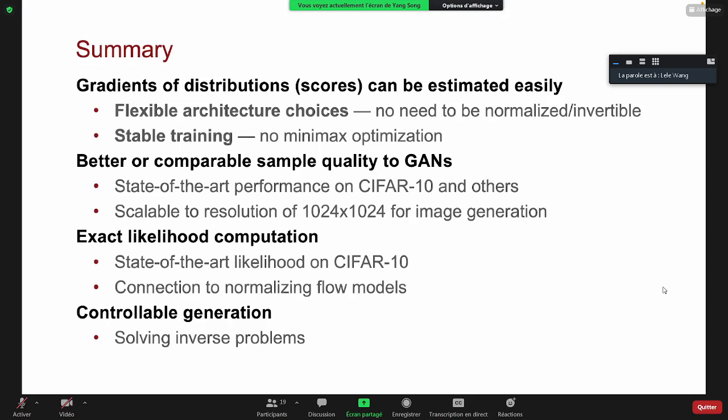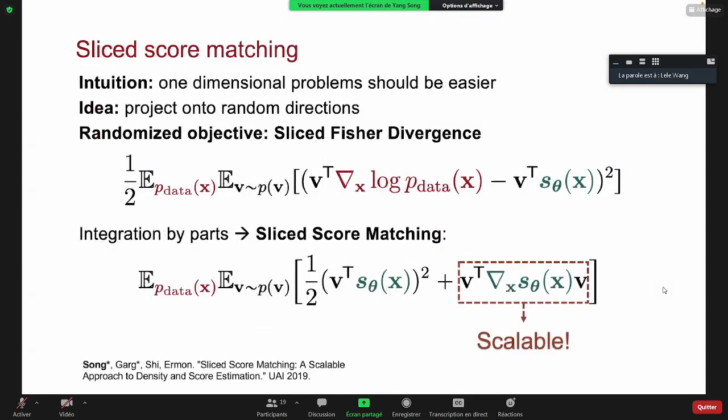I have a question. So for your first work on sliced score estimation, I was curious about the theoretical guarantee. I went into your paper and you can show the proposed estimator has consistency and asymptotic normality. So I was curious, maybe this is a trivial question, but the fact that your estimator converged to the true gradient of the log of the density, does it imply the density that comes out of your estimation also converges to the true density of the data?